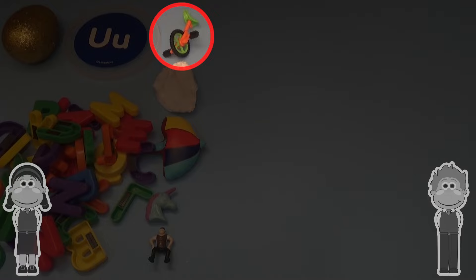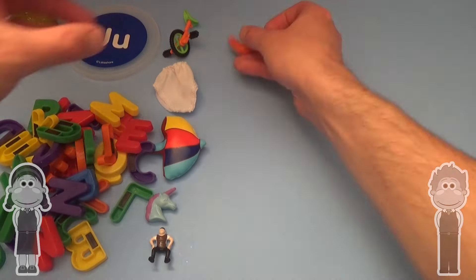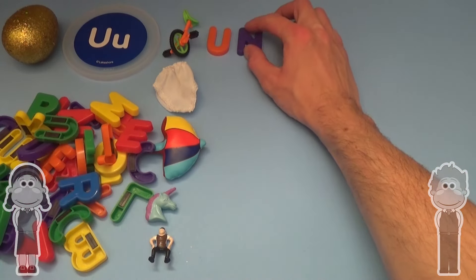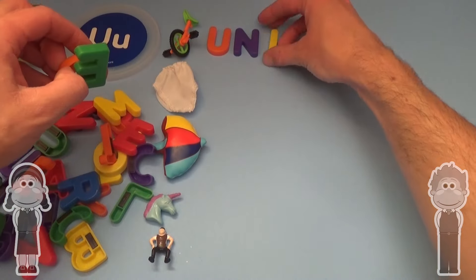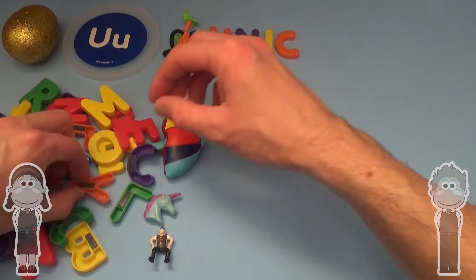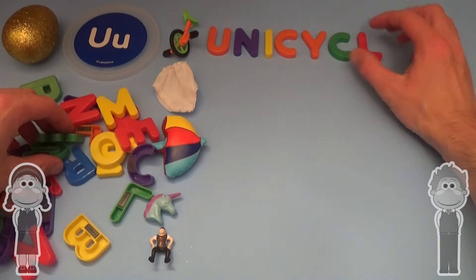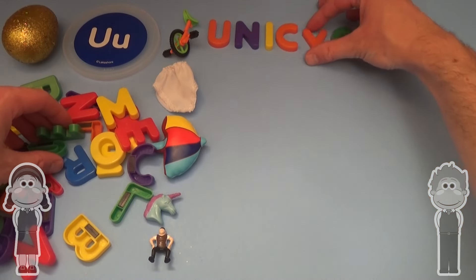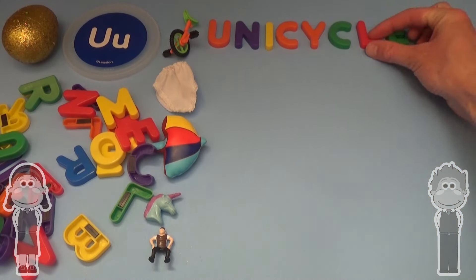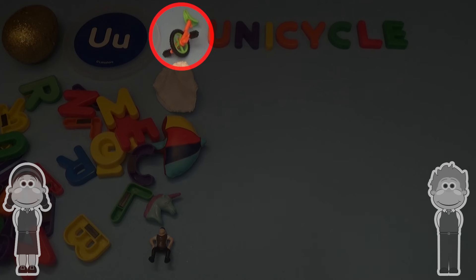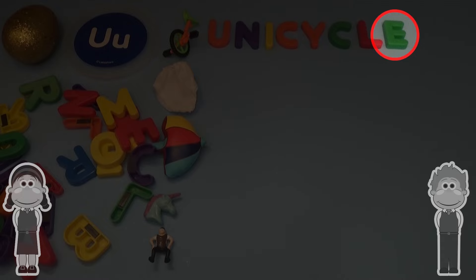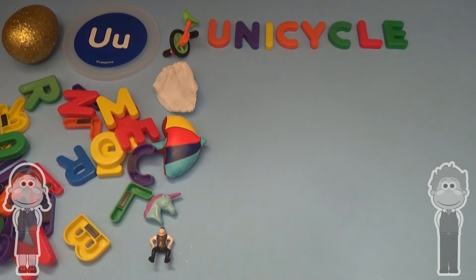And what is this? Let's use the letters, spell it out together! Unicycle! U-N-I-C-Y-C-L-E! Unicycle! Yes!